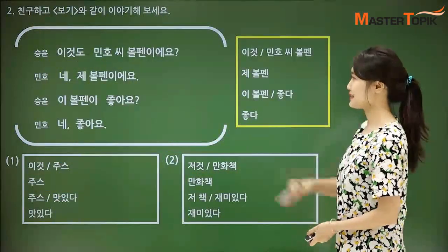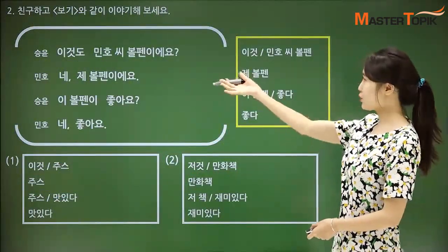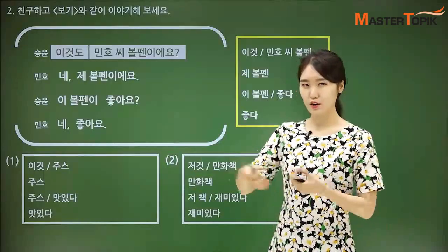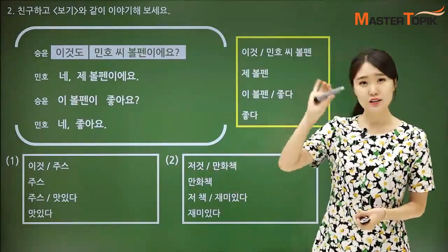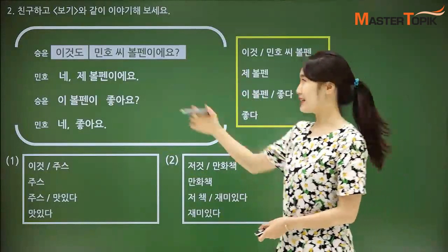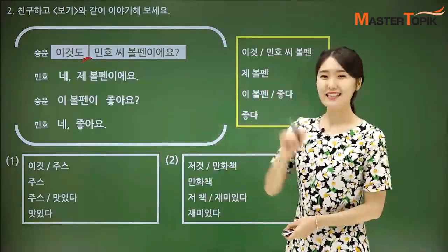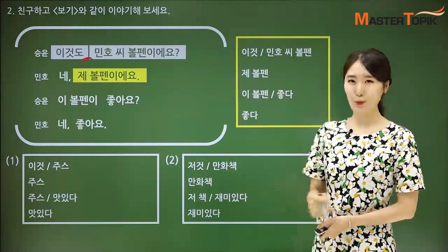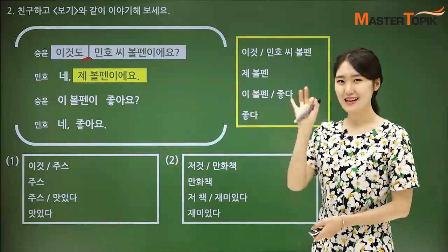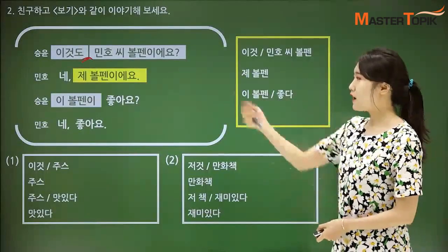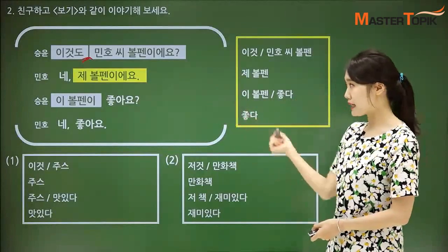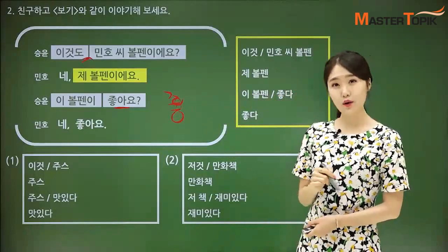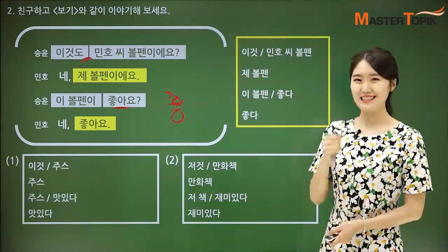Let's see this sentence: 이것도 민호 씨 볼펜이에요. There would be a lot of pens here, and she asked: is this also your pen? 이것도, 민호 씨 펜이에요? 네 — Yes, 제 볼펜이에요. It is also my pen. 이 볼펜이 좋아요. Yes, it's good.